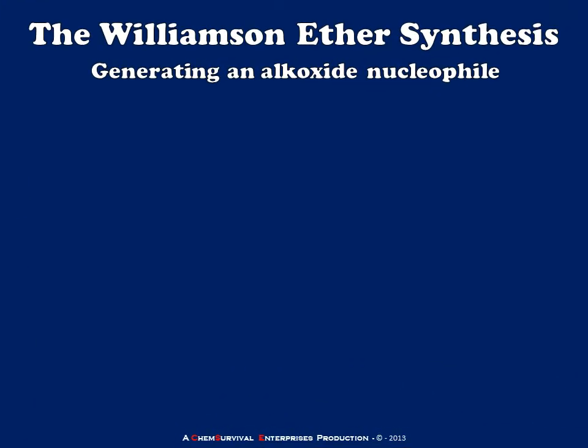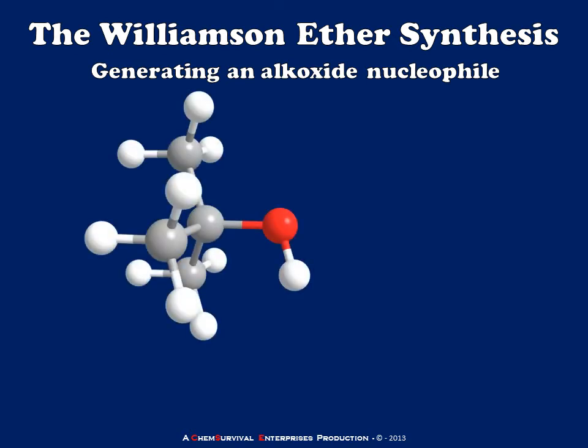The first step in a Williamson Ether Synthesis is to generate your nucleophile from your neutral alcohol. We don't tend to store alkoxide reagents on the shelf because they don't last very long — they're pretty reactive and tend to degrade over time. So let's say we want to start with something like t-butanol to make a t-butoxide nucleophile. We need something that's pretty basic because that alcohol is a pretty weak acid, with a pKa of about 16.